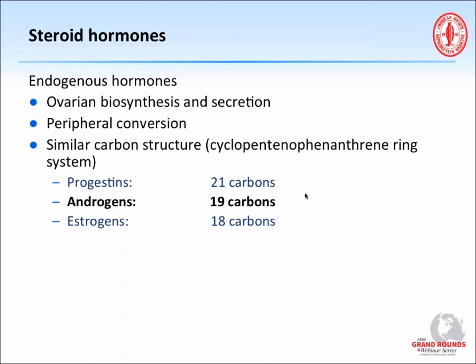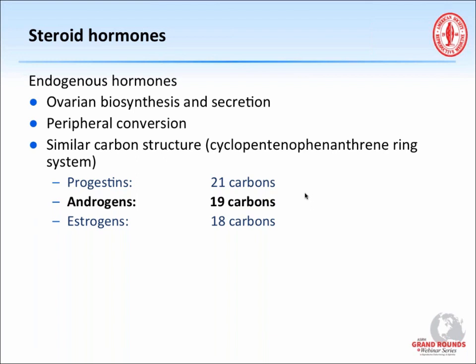A lot of these hormones are derived from endogenous hormones, primarily from the ovary, with some from peripheral conversion. The steroid structures are straightforward: progestins are 21-carbon compounds derived from natural progesterone; androgens are 19-carbon compounds, and most progestins in oral contraceptives are derived from an androgen base; and estrogens used in the combination pill are primarily 18-carbon compounds. Knowing the difference between a 21, a 19, and an 18-carbon compound reassures me that a resident or fellow has a good understanding of what they're prescribing.